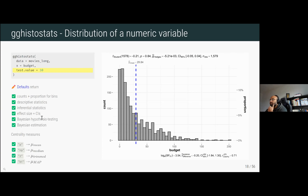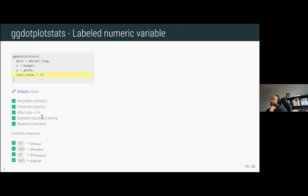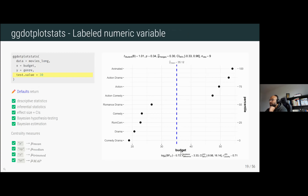You can also change the centrality measure in your preferences. When we have labeled data, we can use the gg_dot_plot_stats function. For example, to see if the budget for a movie changes depending on genre — the data is labeled by genre and we look at the distribution of budget — we can also test if the mean budget differs from a hypothesized value, say 30 million dollars. The statistical details always remain the same: descriptive statistics, inferential statistics, and so on, and you can always change the type of analysis from parametric to non-parametric.